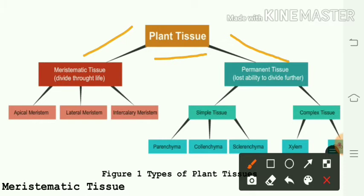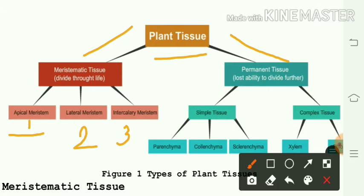Meristematic tissues are of three types depending upon their position. Tissues present at the tip of the stem, root, or leaf are called apical meristem. Meristematic tissues present at the peripheral region of the stem are called lateral meristem. Tissues present at the internodal portion from where leaves are growing are called intercalary meristem.